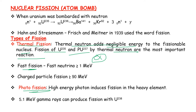Next is fast fission. Fast neutrons have energy greater than or equal to 1 MeV. These fast neutrons are very important for fast fission reactions.